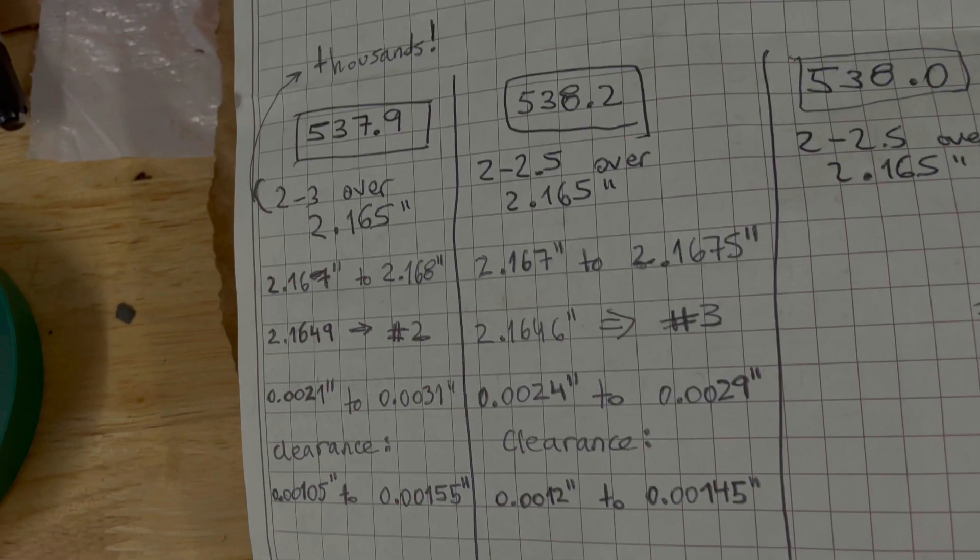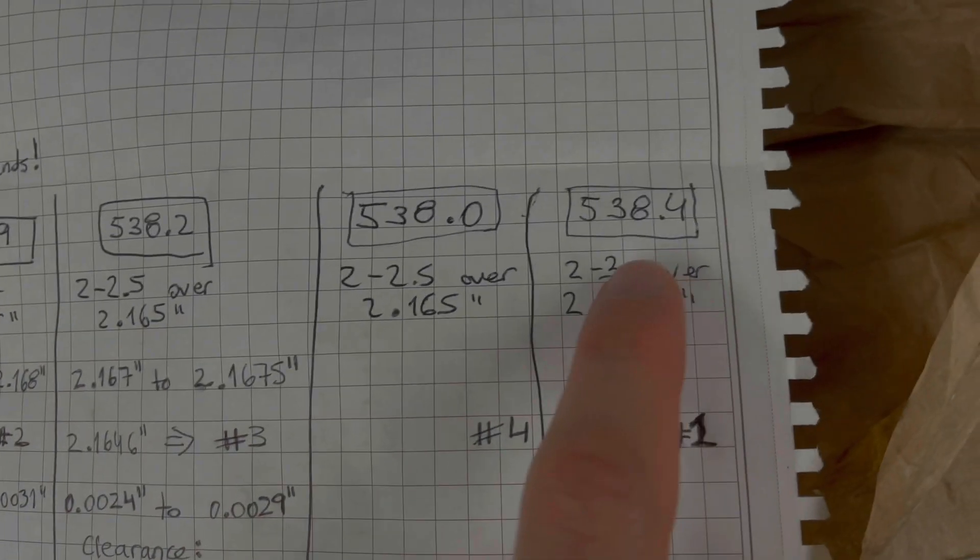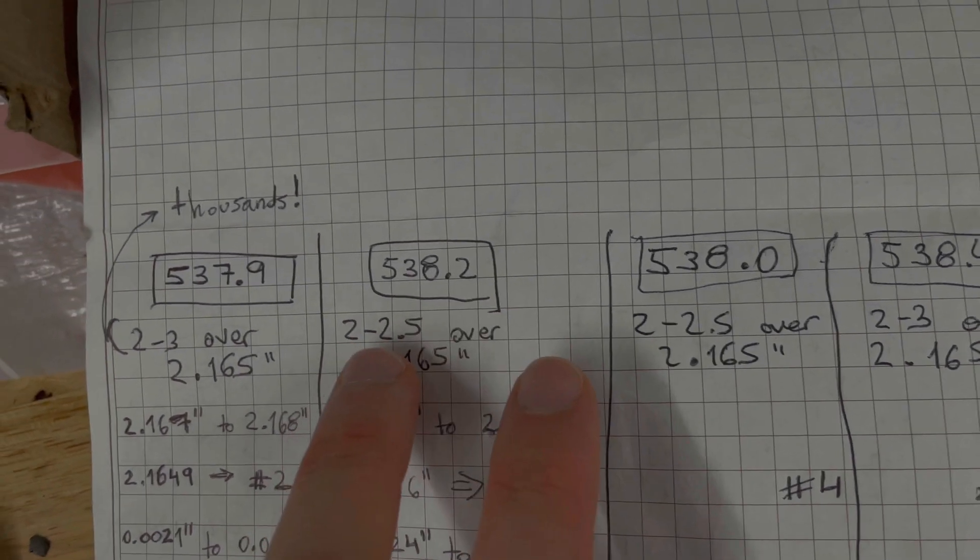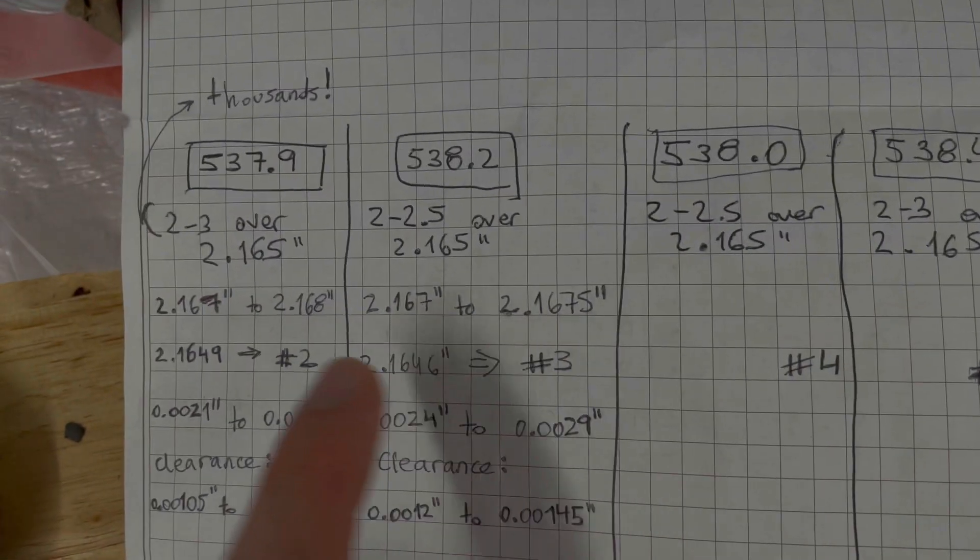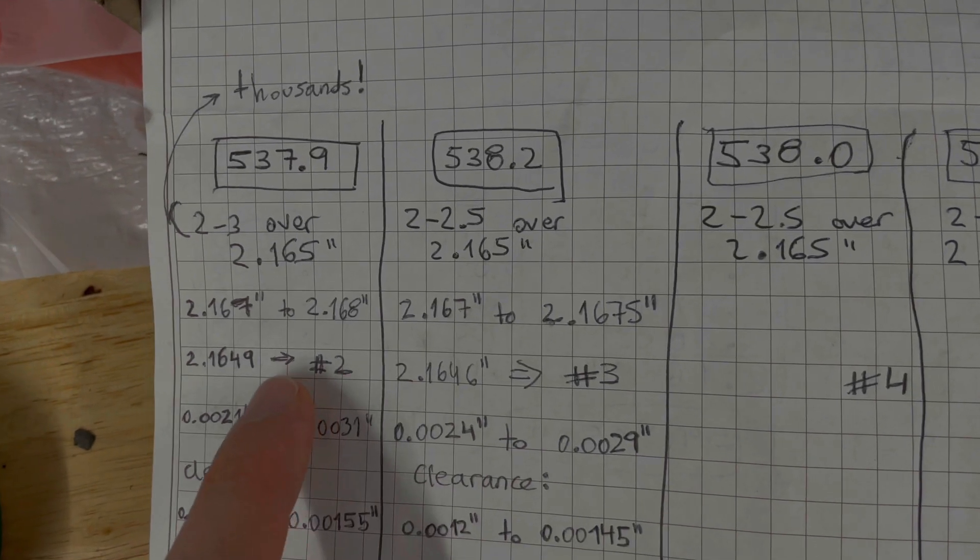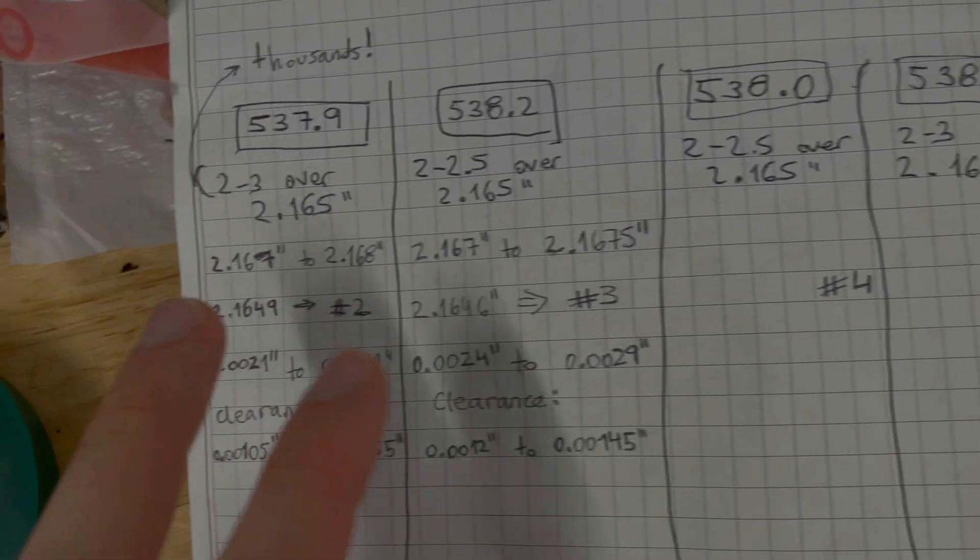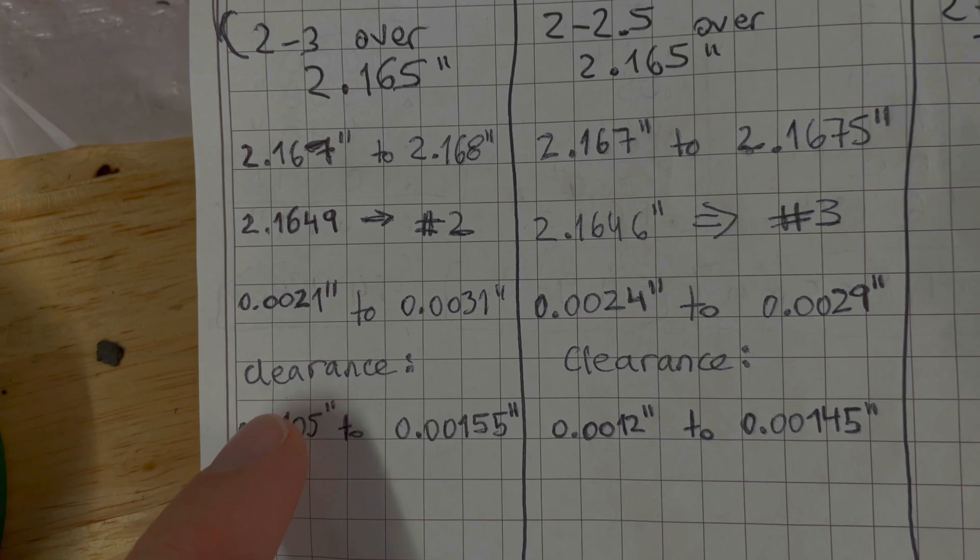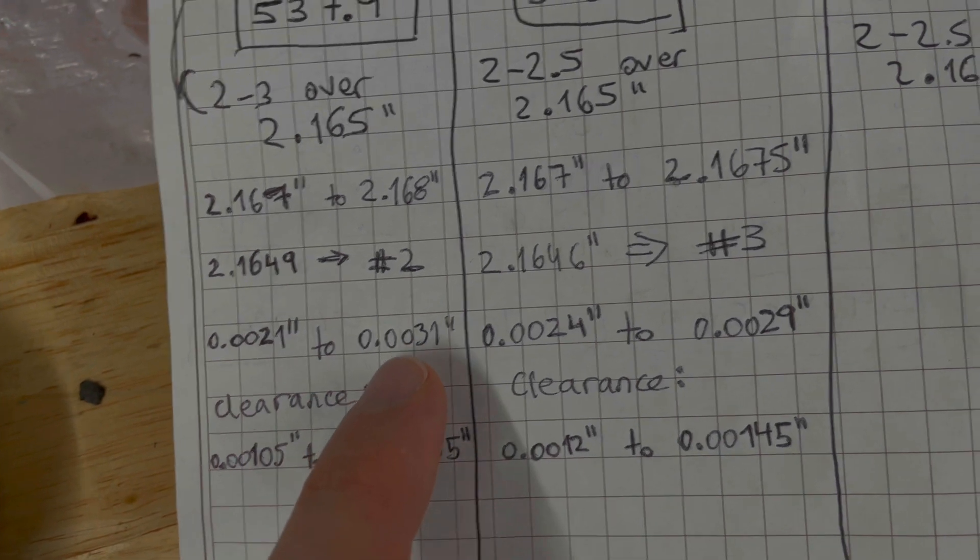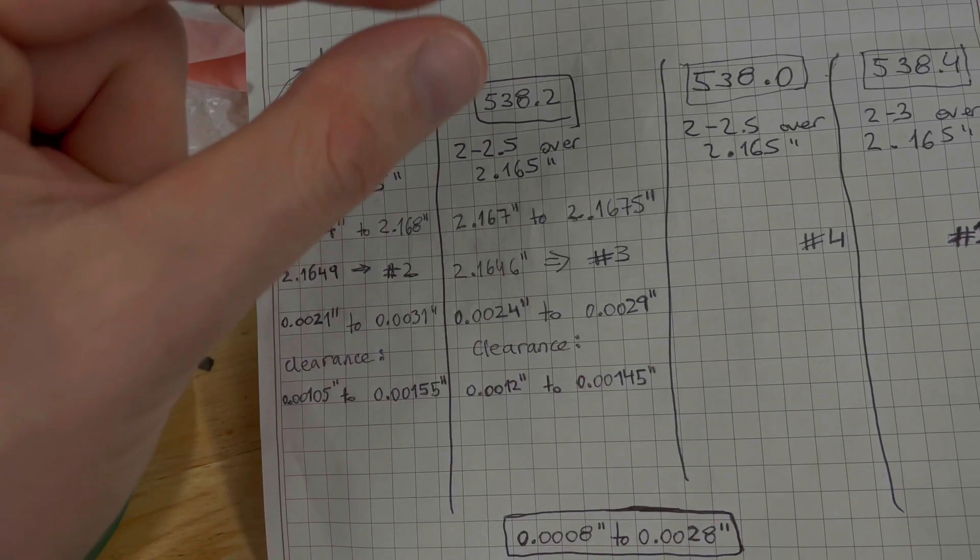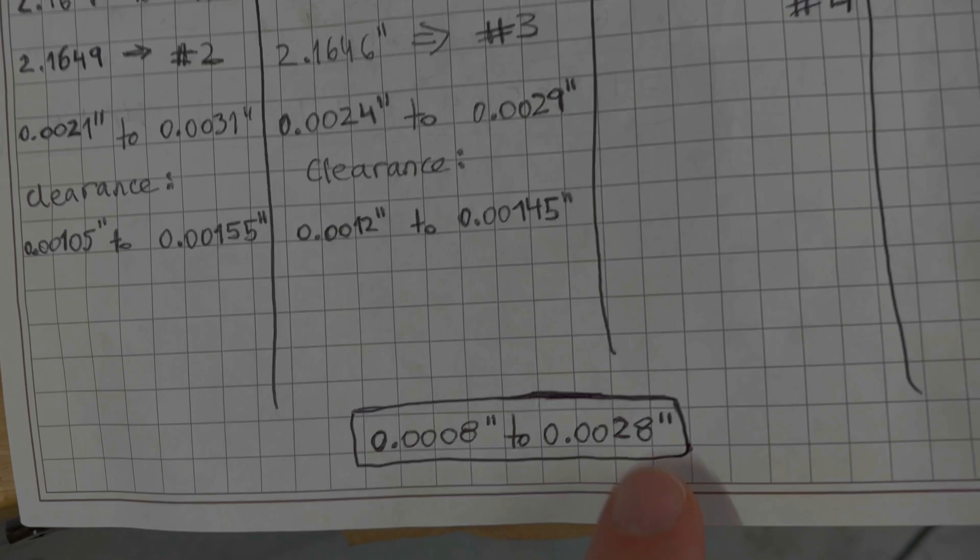The same thing happened with the rods. This one was two to three thousandths over, and these two were two to two and a half over. So I assigned the smaller ones to number three and four, and the bigger ones to number two and one. My clearance—the difference between the bearing and the journal in inches—I divided by two because it's a circle, so you want the clearance on either side. All of them are perfectly in the range from the book.